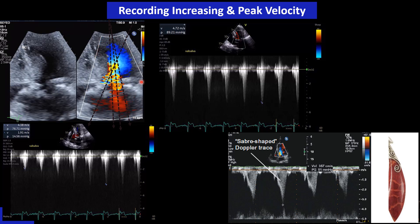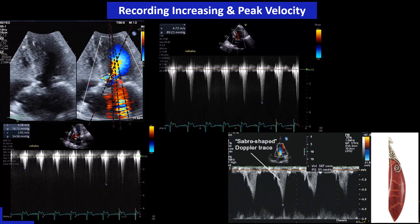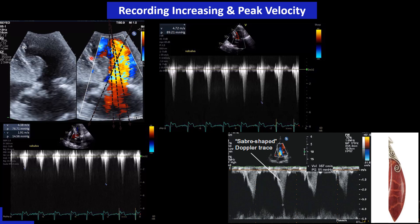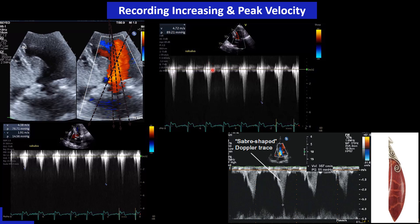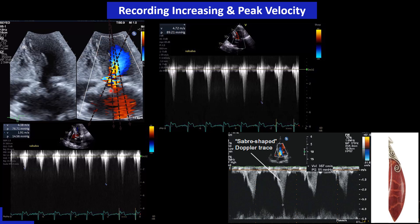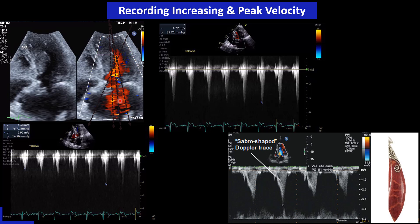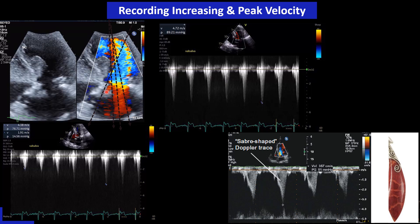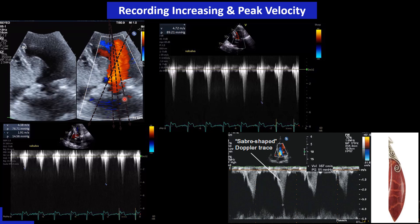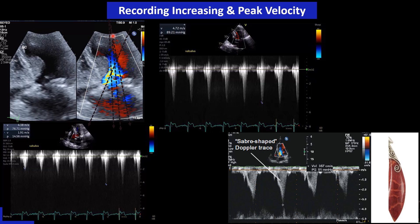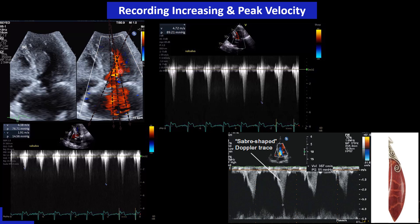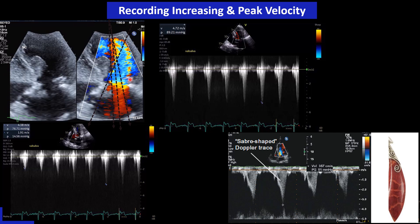We repeat the same maneuver in the apical 3 view. Sometimes in apical 5 we cannot get a very high velocity, but in apical 3 we can catch and record that high velocity, or vice versa. The same principle used for aortic stenosis applies to intracardiac obstruction with the Valsalva maneuver.